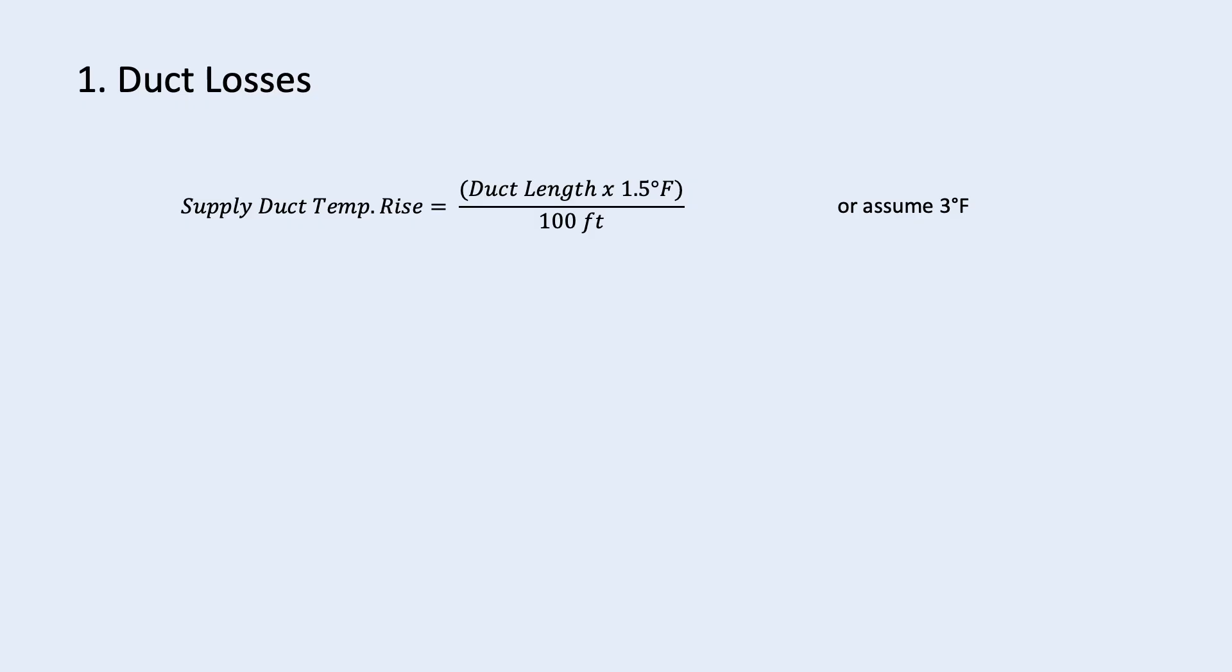First is the heat gain from the supply air duct. This is also known as duct losses. For duct losses, we want to express it in terms of temperature rise. The supply duct temperature rise is duct length times 1.5 degree Fahrenheit divided by 100 feet.